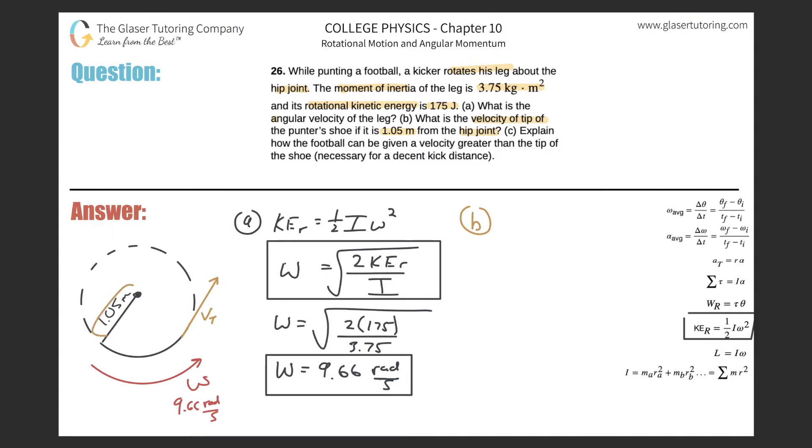How does tangential velocity relate to a radius and an angular velocity? You have to remember this formula: the tangential velocity equals the radius of rotation multiplied by that angular velocity. So really it's fairly straightforward.